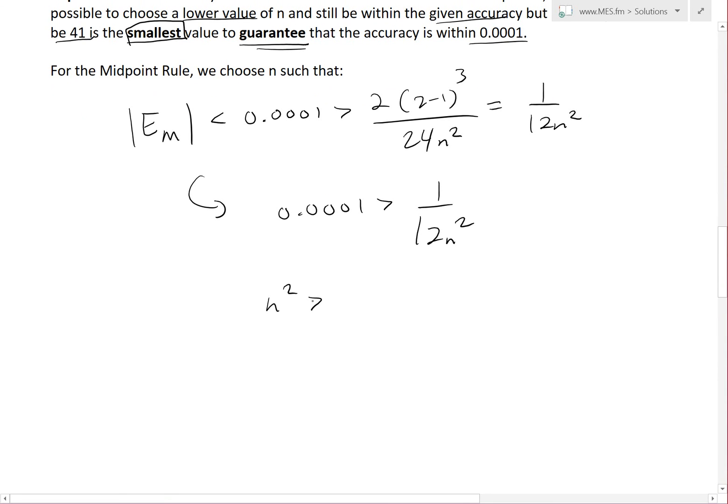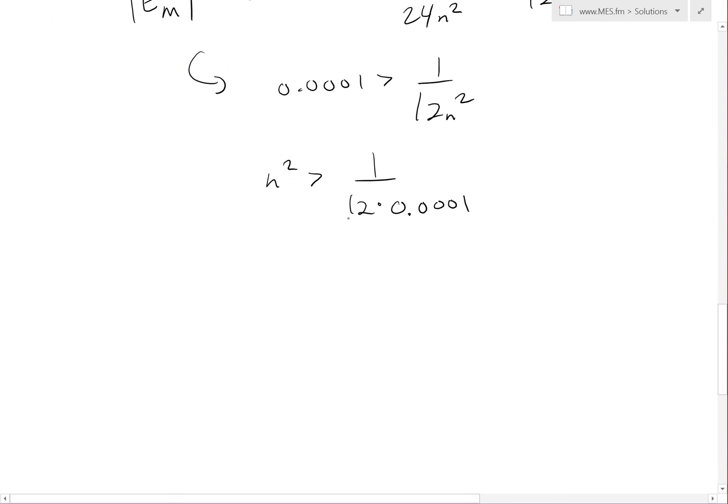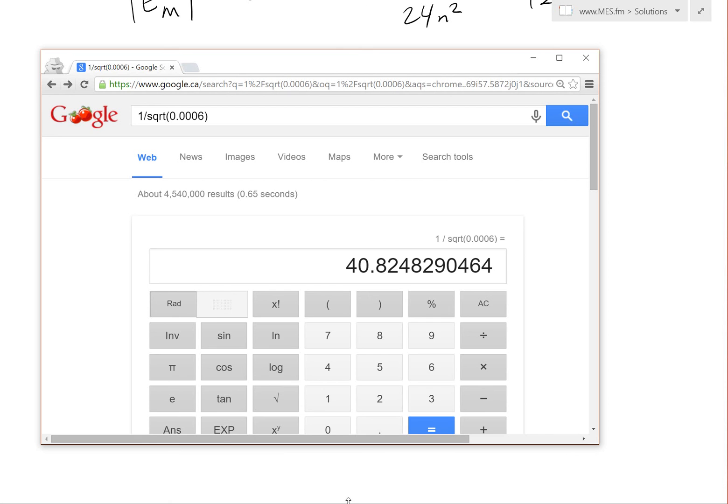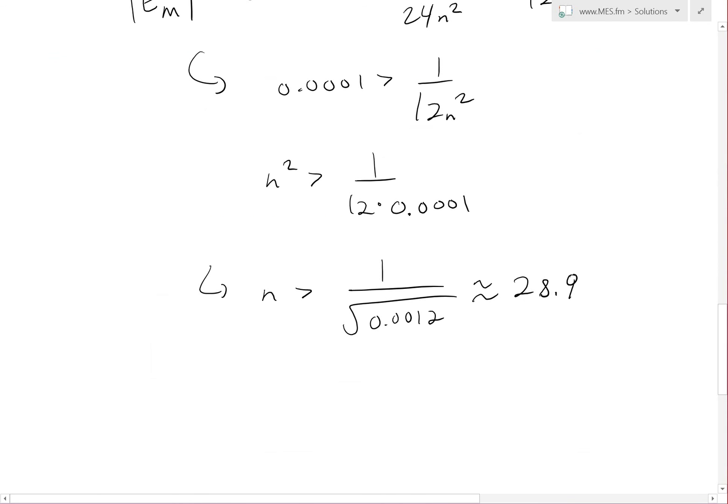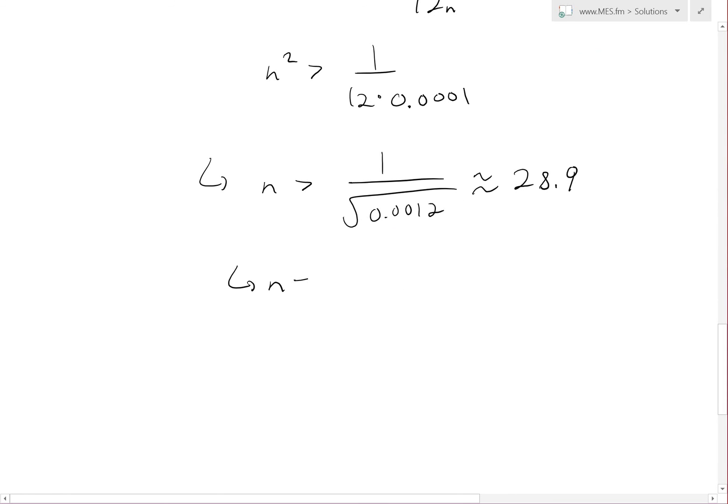Square rooting, n > 1/√(0.0012), which equals roughly 28.86 or 28.9 when you plug into the calculator. Since n has to be a whole number, we choose n equals 29.